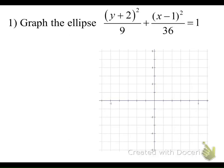We're going to continue with ellipses, but this time we'll be graphing the ellipse from the given equation. Notice here that we have an equation that's in standard form — we know that because it's set equal to 1, and we can see the horizontal and vertical distances in these denominators.